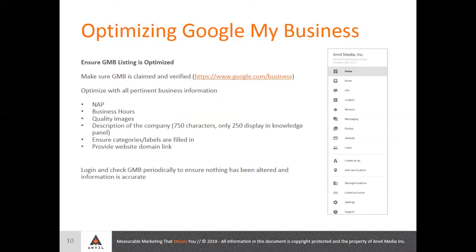On the right is a screenshot of the dashboard and all the categories within the Google My Business dashboard. You want to go down through all of these and make sure all the important information is filled out. Posts are another relatively new feature — you can post different events, sales, promotions, or provide links to a blog post on your website. That will actually display in the knowledge panel, so that's definitely something you want to be utilizing.